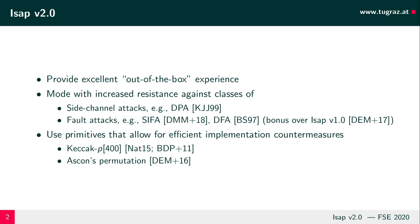We designed the mode of ISAP V2.0 to provide increased resistance against several classes of side channel and fault attacks like differential power analysis, statistical ineffective fault attacks, and differential fault attacks. The increased resistance against fault attacks is the main change compared to the original version. We instantiate this mode with permutations that allow for efficient implementation-level countermeasures. We base our instances on already existing permutations: the 400-bit variant of the Keccak permutation as specified in FIPS 202, and the Ascon permutation.